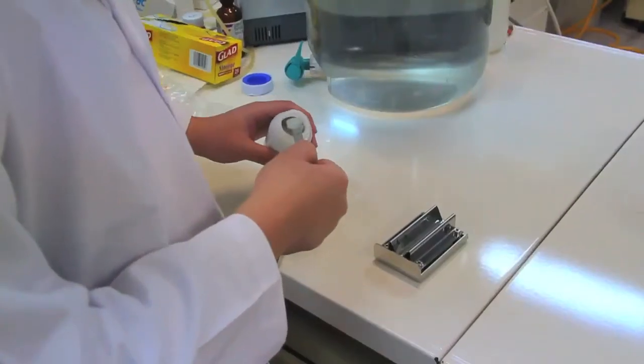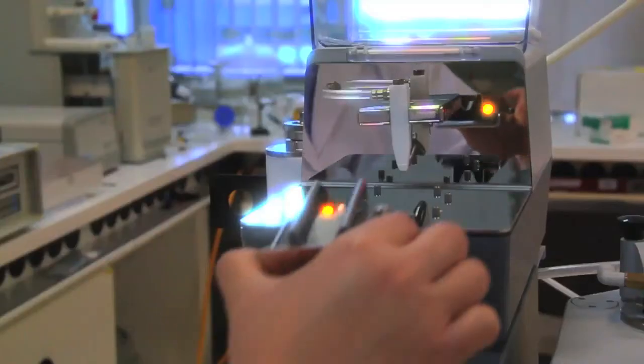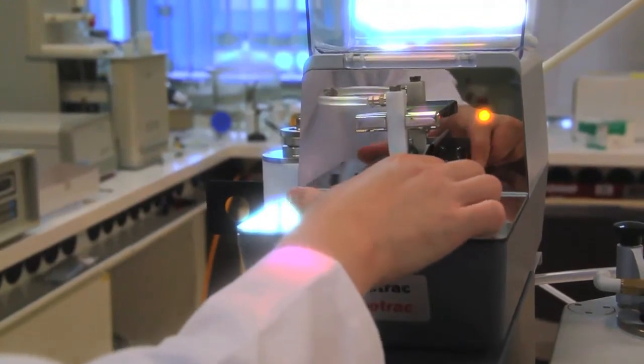To analyze a dry powder sample, scoop a small amount of sample onto the sample tray and place the tray onto the Turbotrack.